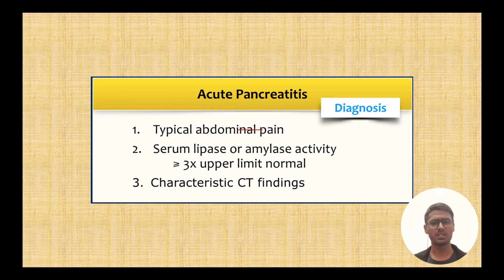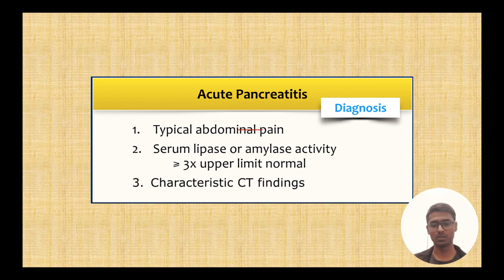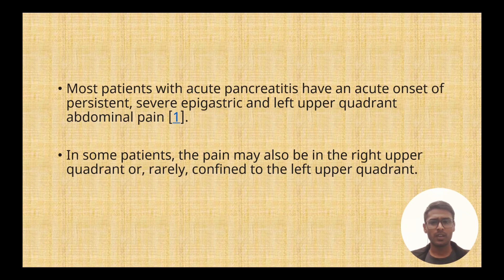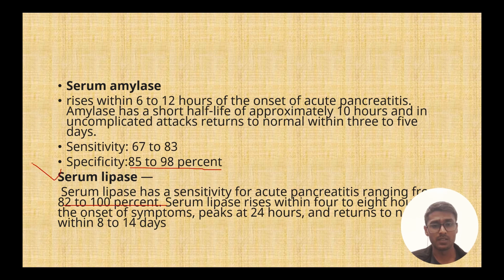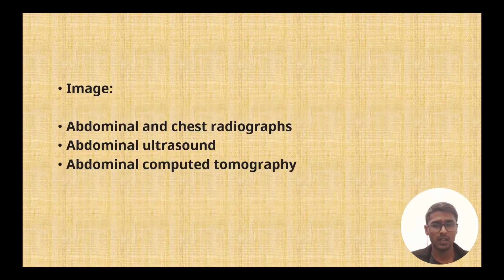If a patient presents with epigastric pain, your goal is to check these criteria — if two of three are met, make the diagnosis right away. The specificity for amylase is 85 to 98 percent, whereas for lipase it is almost 100 percent. So always use lipase, not amylase.